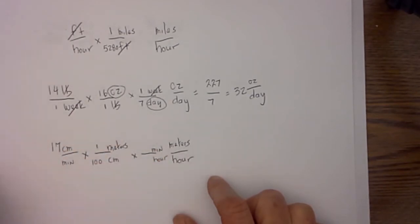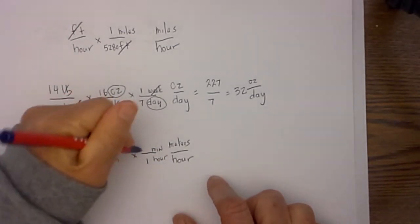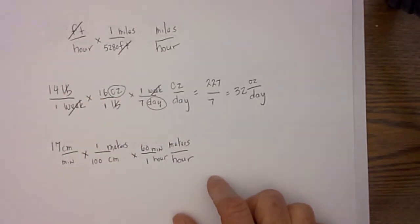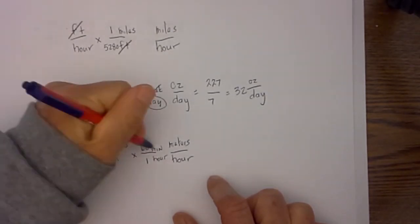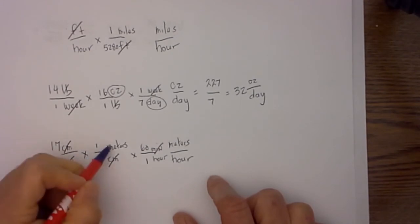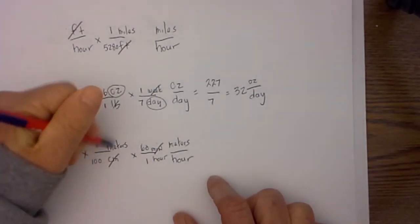Hours is larger than the minute so I will place a 1 by the hour and a 60 by the minute because there are 60 minutes in one hour. Well let's see what cancels and then we have the minutes cancel and so we are left with meters and hours.